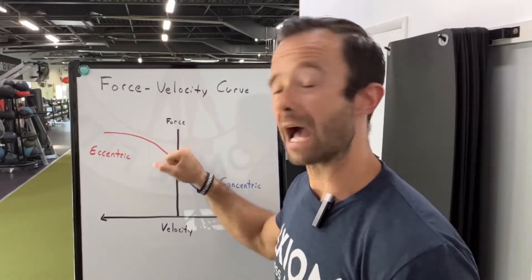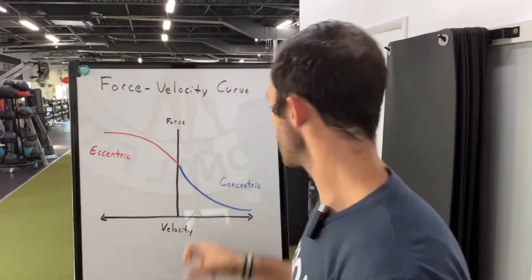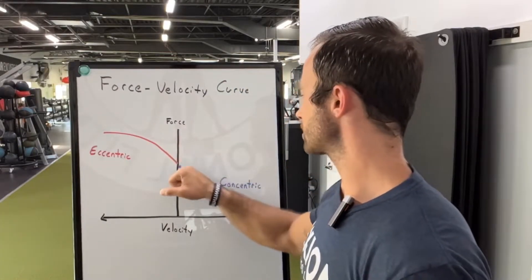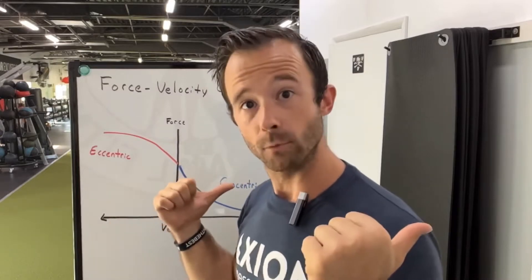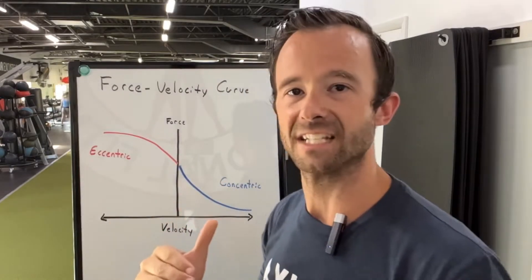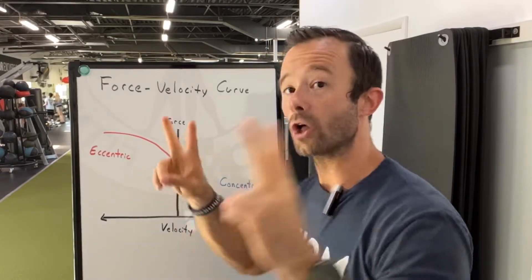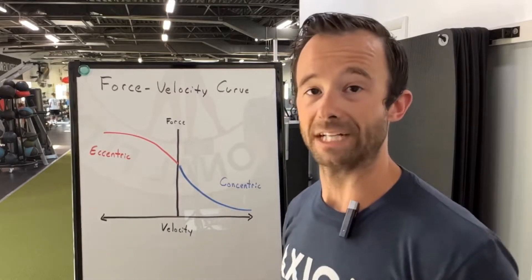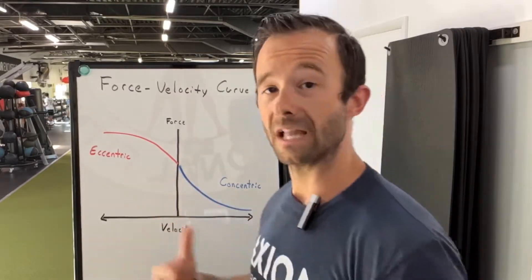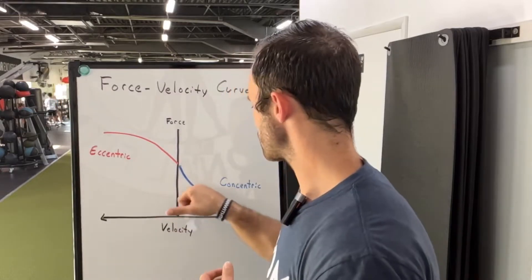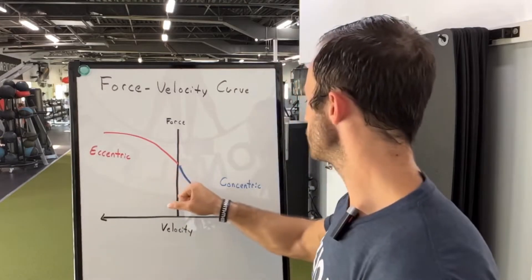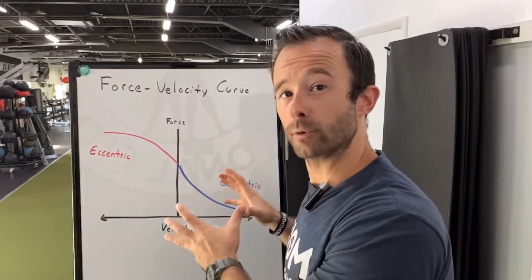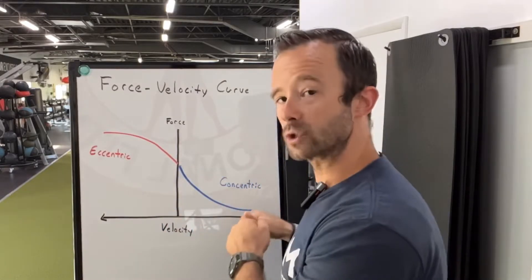If you look at it this way, max strength would happen higher up on the concentric portion of the curve. As we move down, we go from max strength into strength-speed, where if you lowered the weight a little bit on that back squat, you'd be able to move a little bit faster — your capacity for velocity increases. Moving further down, somewhere in the middle, is where optimal power training really happens. For a lot of lifts like a back squat, maximal power training is probably optimal somewhere around 40 to 50% of someone's one-rep max. Then we move into speed-strength, where speed takes more priority over force production, and then we get to true speed and max speed.